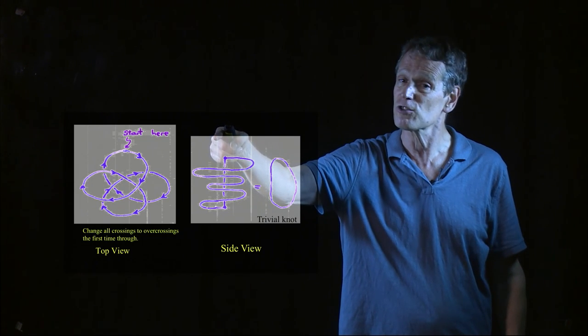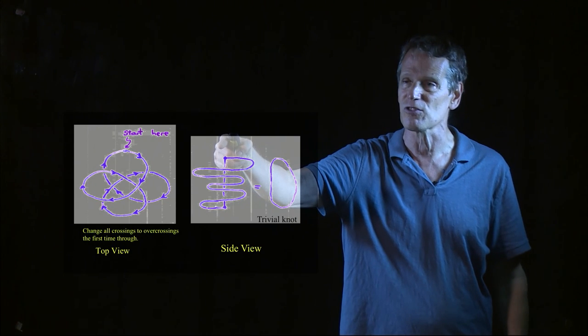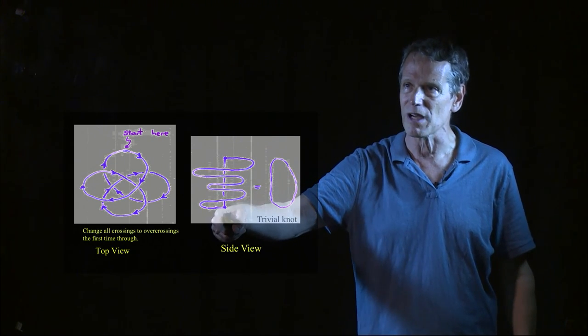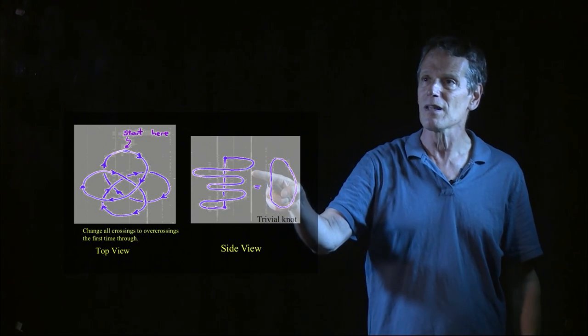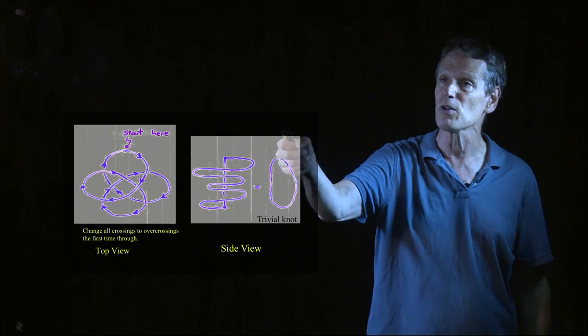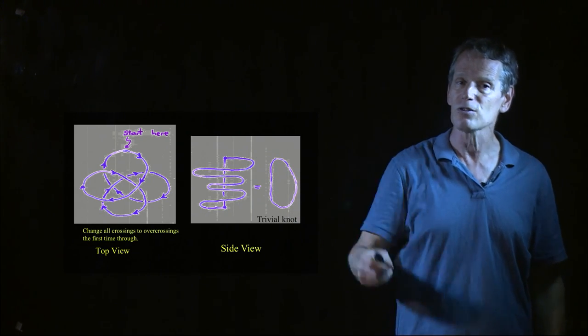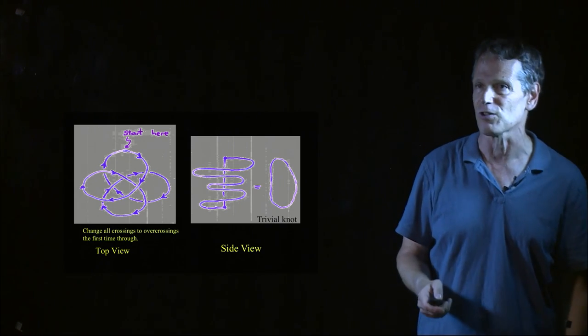Now, I could do this construction for any picture of a knot that I had, change the crossings in such a way, so I would always be going downhill as I followed the roller coaster around until I get to the bottom, and then I take the elevator back to the top. And you'll notice in this picture right here that I can always disentangle this. I can just pull those strands out of the way, and I have a trivial circle, as you see right here. So this shows that any knot can be turned into the trivial knot just by changing crossings.